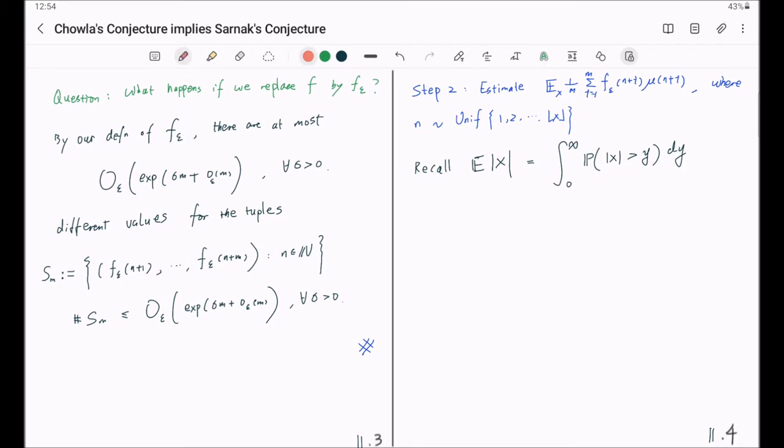This is very classical in probability, but in case you are not familiar with it, let me quickly prove it. The proof uses Fubini's theorem. What we do here is that we are going to write this into a double integral, dp, dy, and we use Fubini's theorem to switch the integrations. This will be dy and then followed by dp.